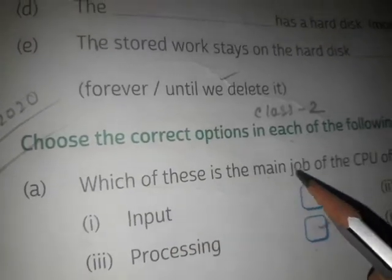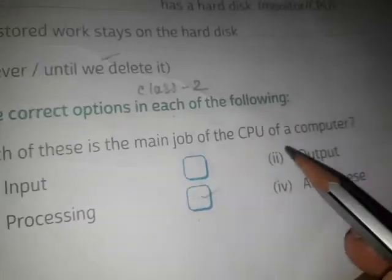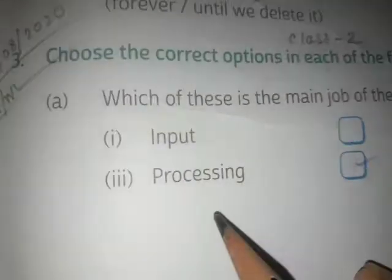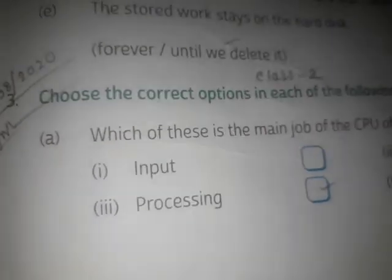Question: Which of these is the main job of the CPU of a computer? Options are input, output, processing, all of these. We know the answer is processing.